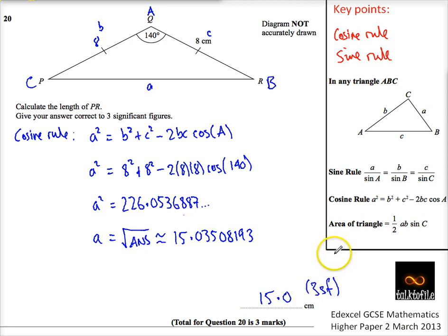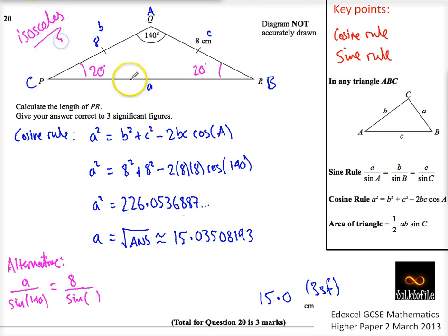So that's relatively straightforward. Now we could have used the sine rule. So alternative, I could have used A over sine 140 is equal to 8 over sine of something, and I need to know what this angle is. Well I know that that's 20, and this has got to be 20, because it's an isosceles triangle.